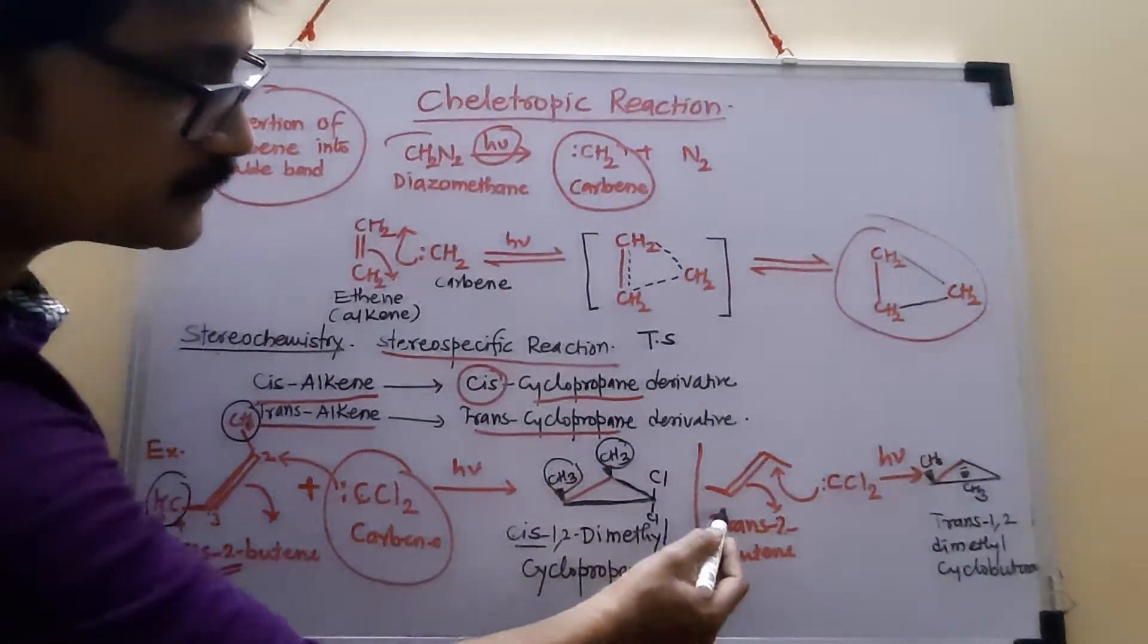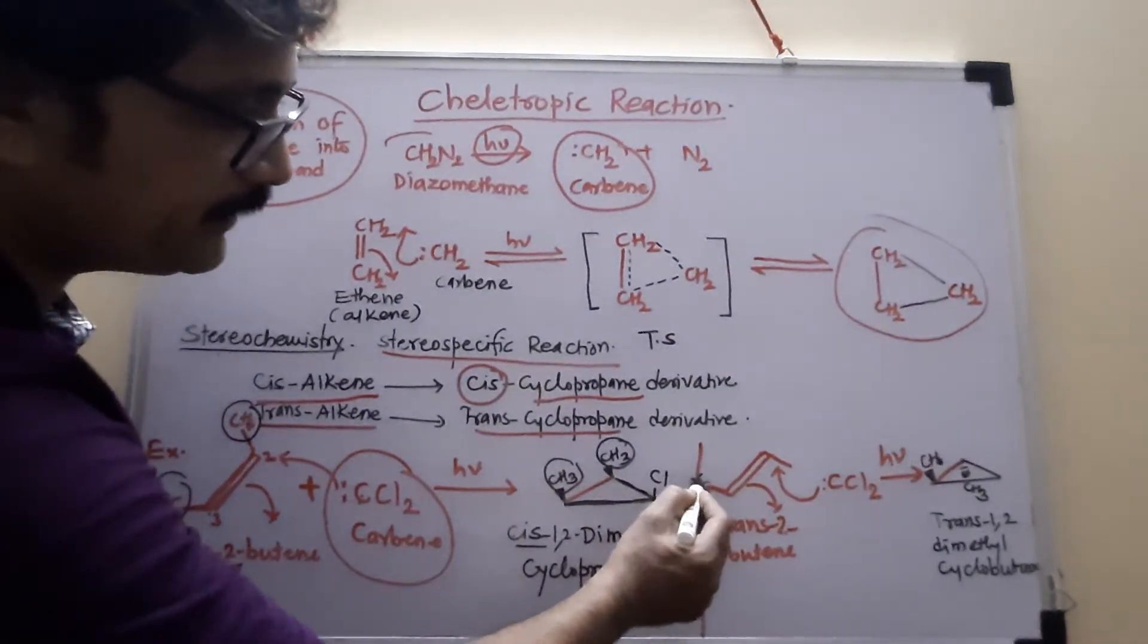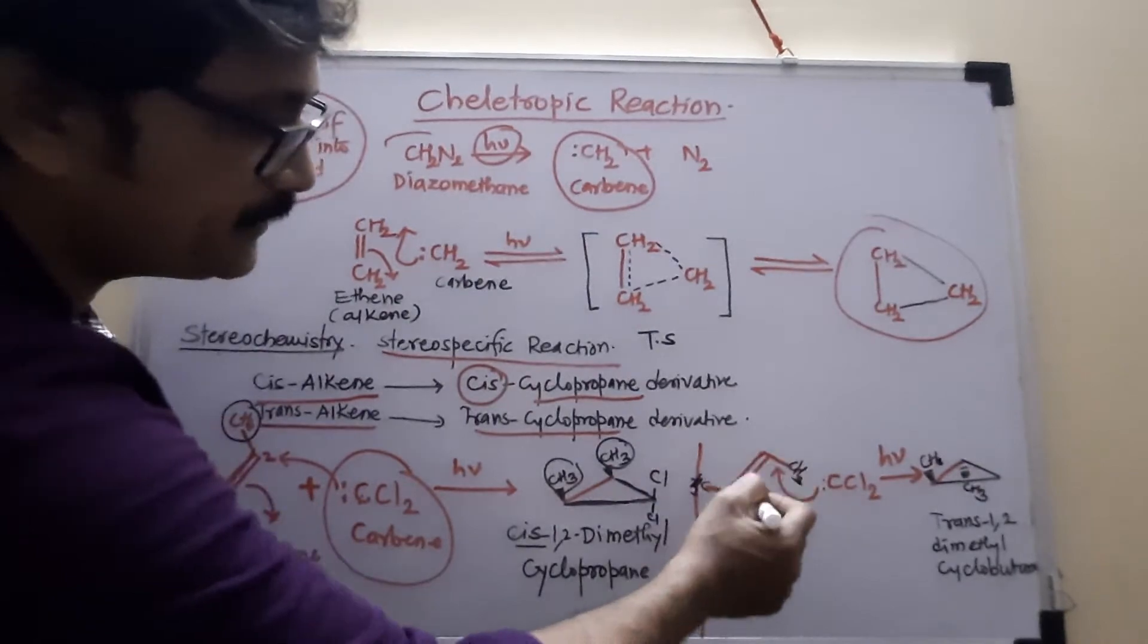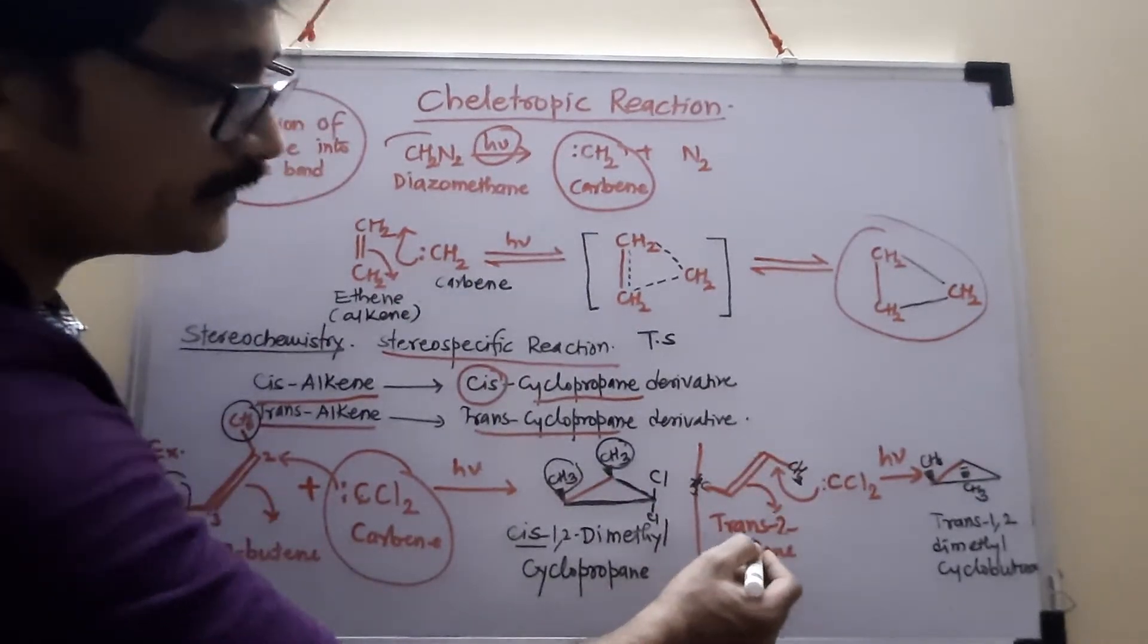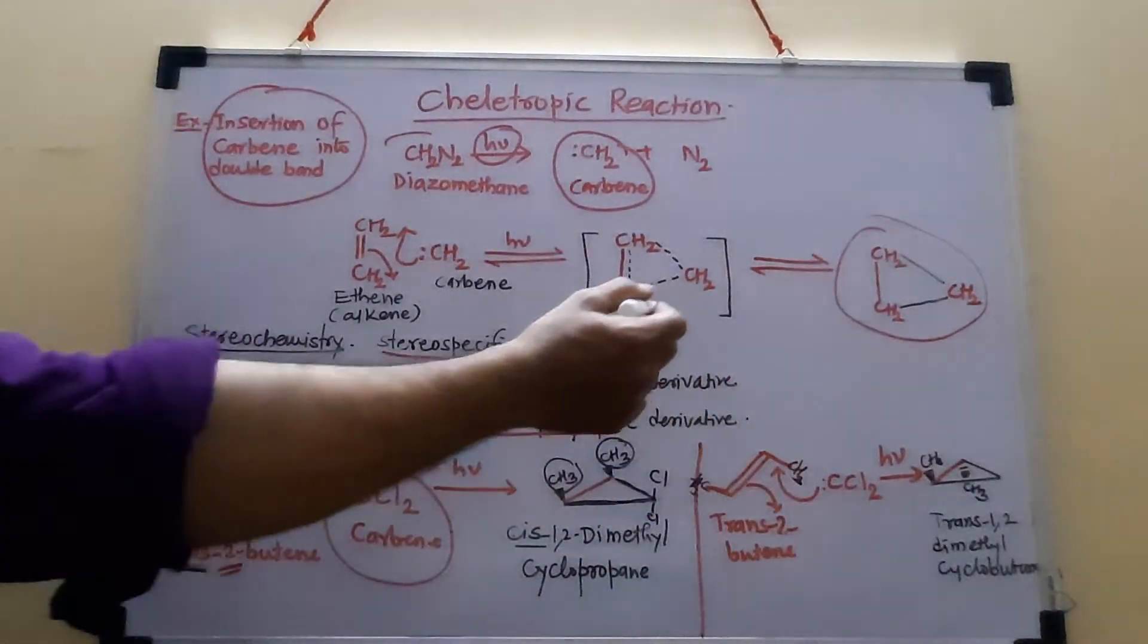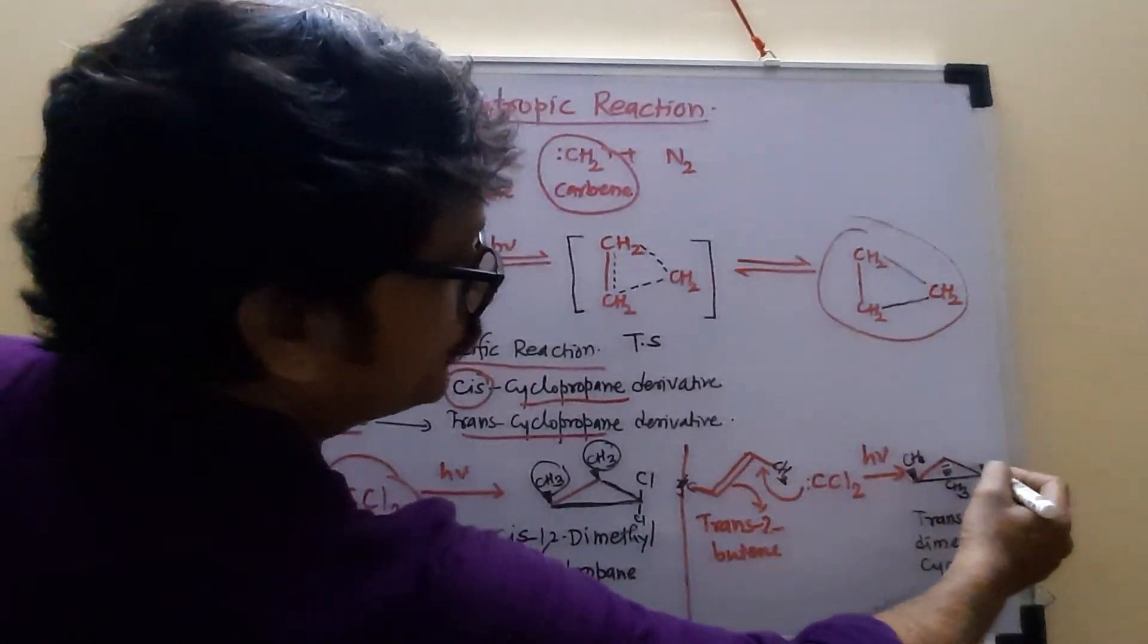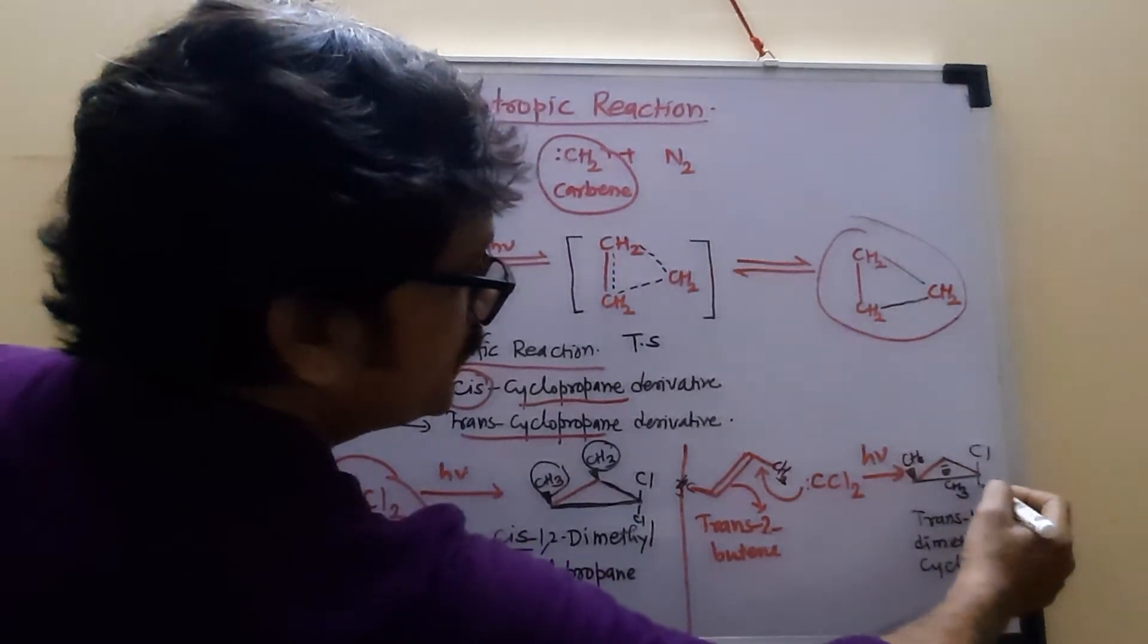Similarly, if your starting material is trans, where both methyl groups, CH3, CH3 are towards the opposite side of the double bond. So this is trans-2-butene. And when this is treated with dichlorocarbene, this carbene, 2Cl.